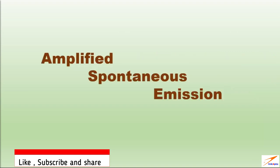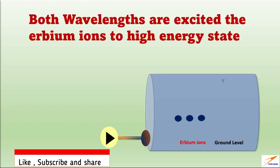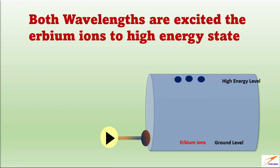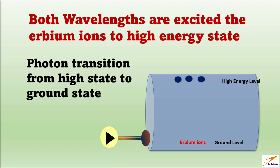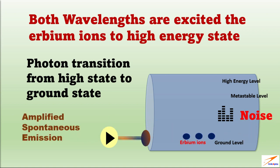The main factor is amplified spontaneous emission, which we call noise also. Both wavelengths excited the erbium ions to high energy state, and from there ions start dropping to ground. When photons transition from high state to ground state, produce lots of excess noise. This noise is called amplified spontaneous emission, and this excess noise varies based on wavelengths used to excite ions.